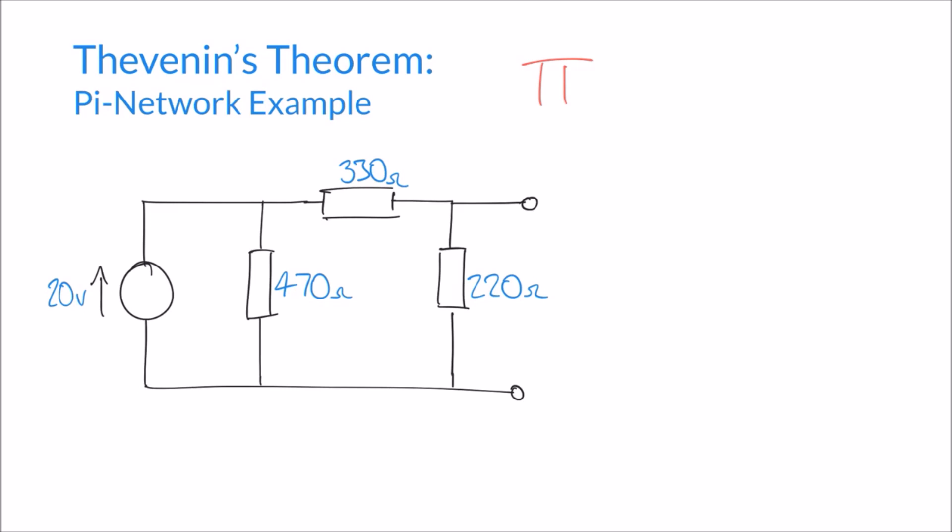So let's go ahead and use our potential divider formula to calculate the Thevenin voltage in this circuit. We know that the Thevenin voltage is the supply voltage, Vs, multiplied by a fraction.